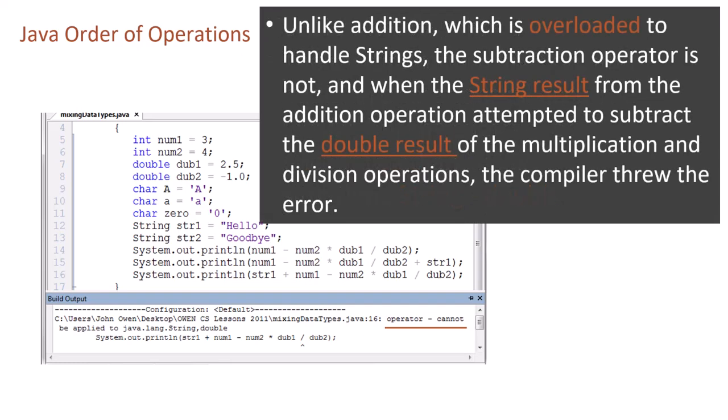Unlike addition, which is overloaded to handle strings, the subtraction operator is not, and when the string result from the addition operation attempted to subtract the double result of the multiplication and division operations, the compiler threw the error.